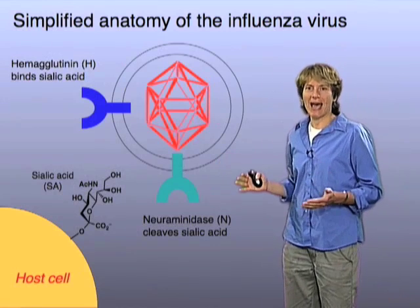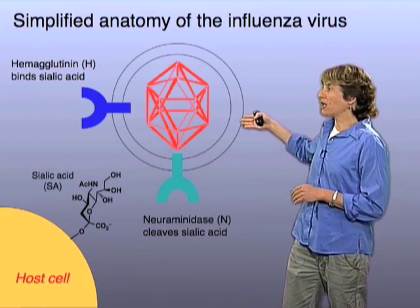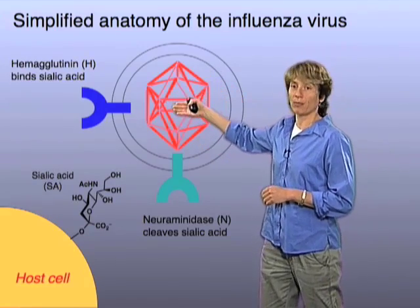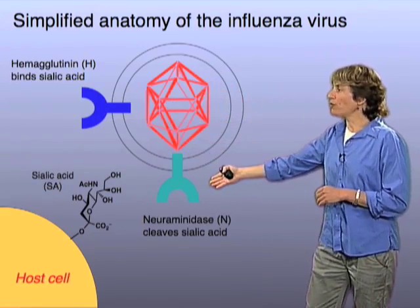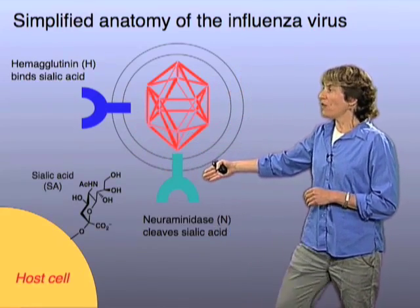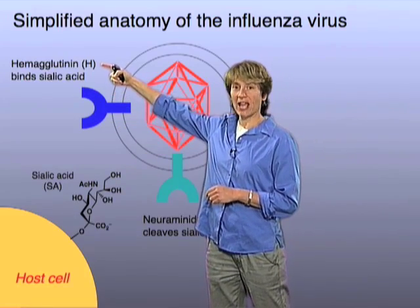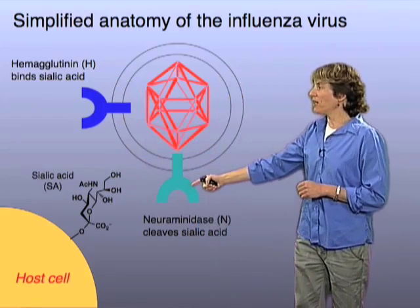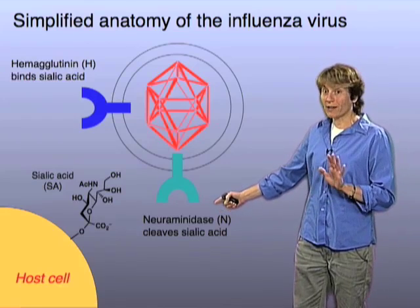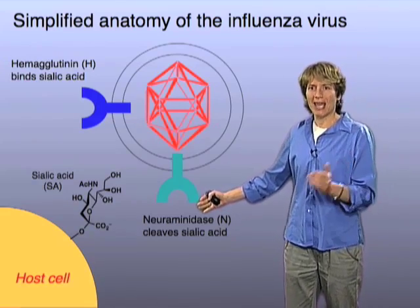Here's a cartoon that illustrates the anatomy of the influenza virus. It's a membrane-enclosed virus that has a core with both RNA and proteins, but there are two proteins that sit on the membrane envelope of the virus. Those proteins go by the name hemagglutinin, which I abbreviate H, and neuraminidase, which I abbreviate N. The swine flu is more scientifically termed H1N1.